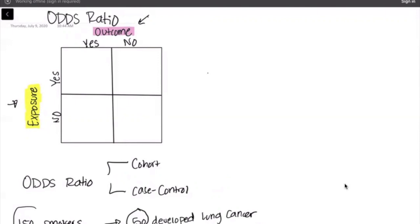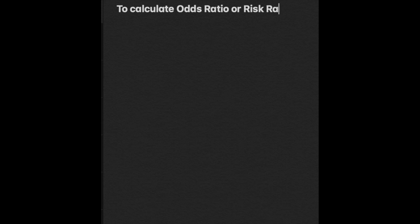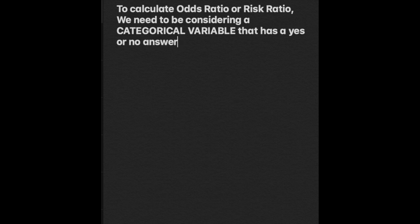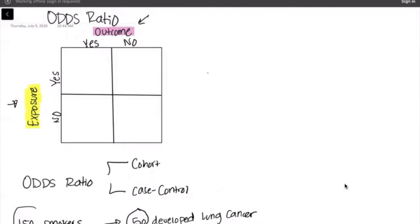The only time you can do an odds ratio or risk ratio is if you have a categorical variable. In this case, did the patient develop lung cancer yes or no? That makes sense, that's what we're looking at and so I can indeed make a two by two table and calculate an odds ratio. Now since this is a cohort study I can also calculate a risk ratio but we're going to do odds ratio in this case.